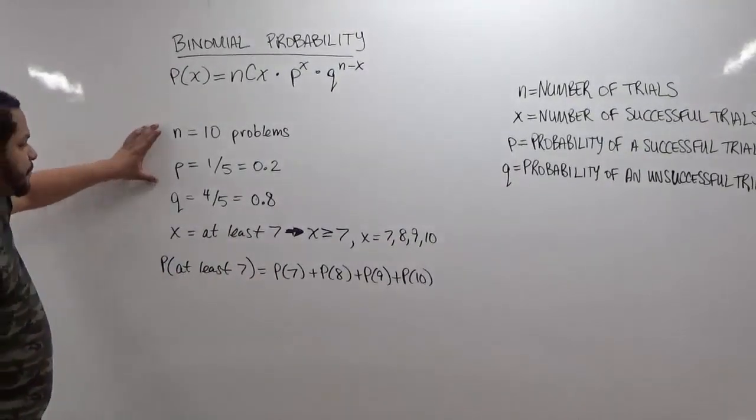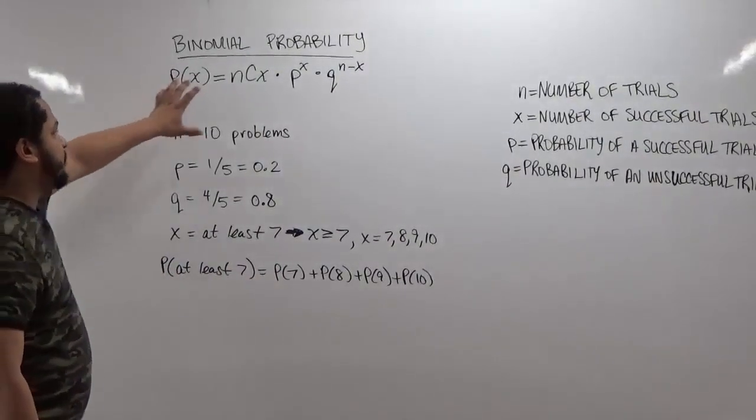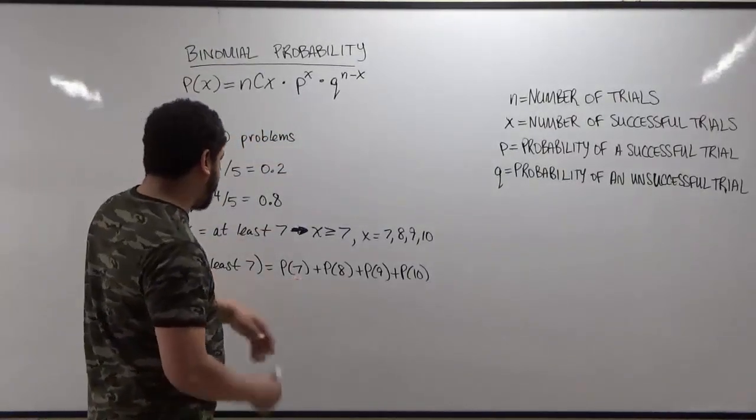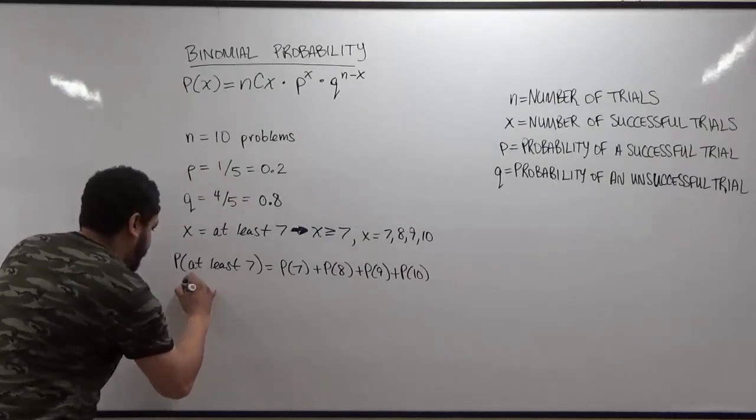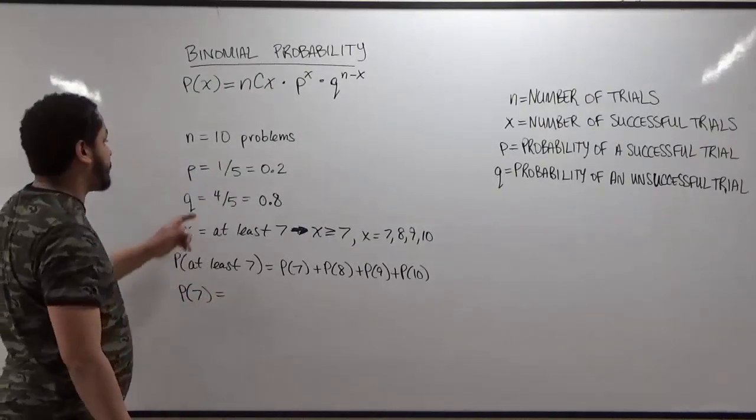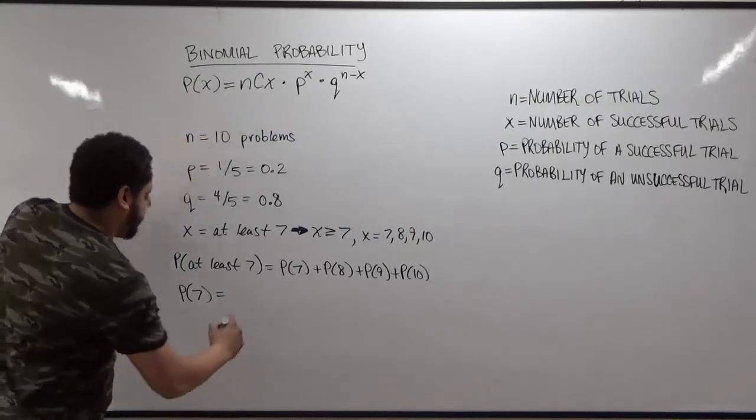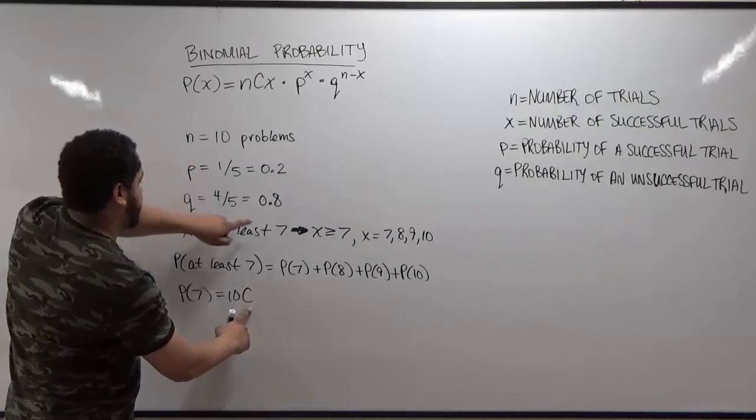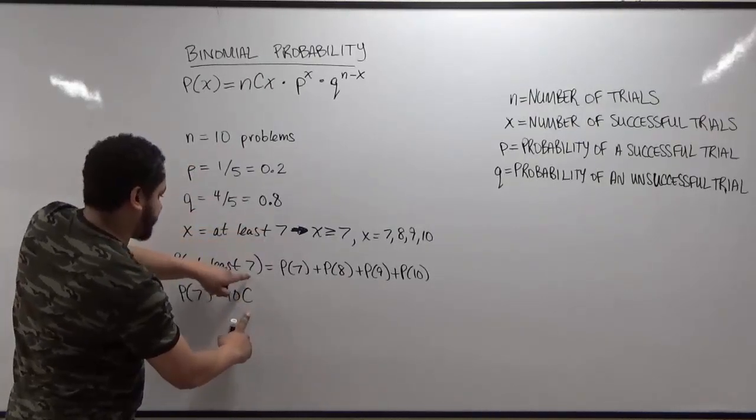Now let's complete one of these, so we can get a good look at how the binomial probability distribution function works. So here we have everything we need to know. Let's deal with the probability of 7 first. And we say, to get the probability of 7 correct answers, we would take the n, which is 10, do the combination of 10, combination 7, because our x is 7.